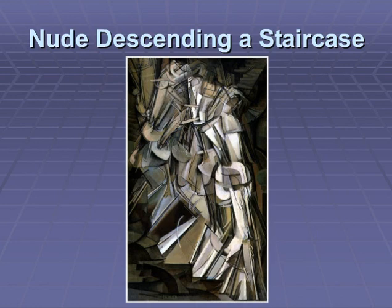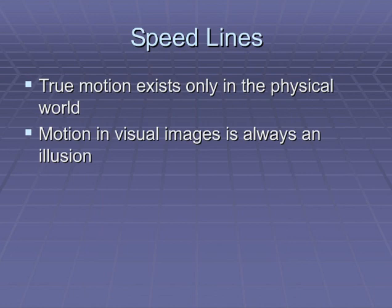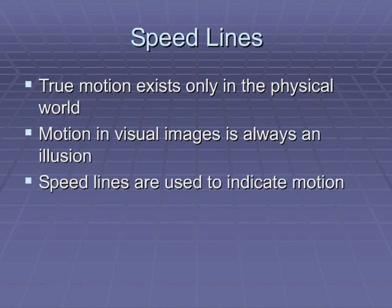Also from 1912, we have Marcel Duchamp's Nude Descending a Staircase No. 2. In this case, we see multiple views, not just that blurred motion. To quote Scott McCloud again: somewhere between the futurist dynamic movement and Duchamp's diagrammatic concept of movement lies comic's motion line. Motion lines, or speed lines, are fascinating things, because true motion only exists in the physical world. Motion in visual images is always an illusion, so speed lines are used to indicate this motion — for example, the roadrunner leaving in a puff of dust.